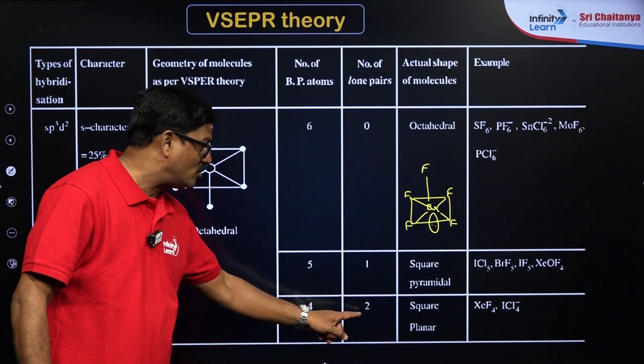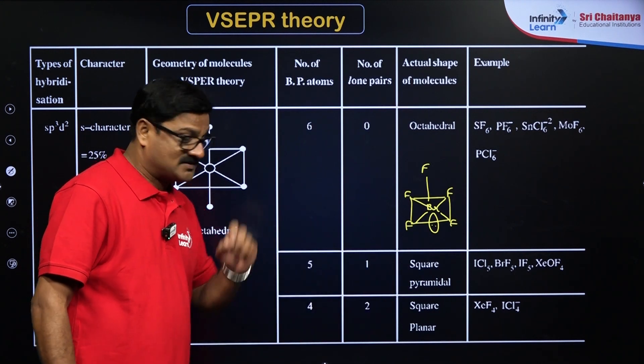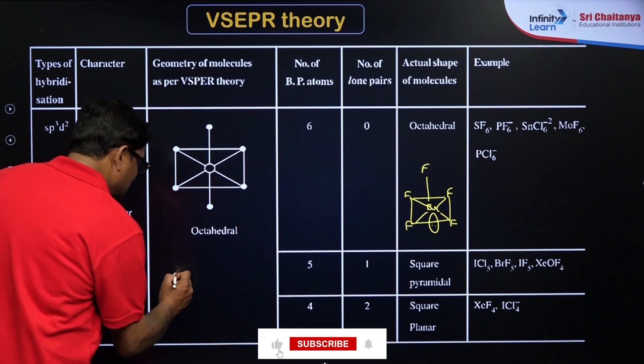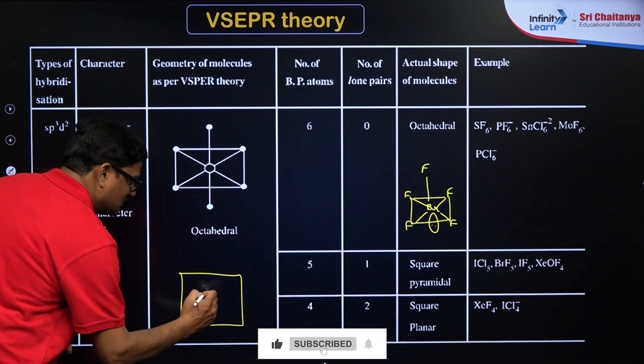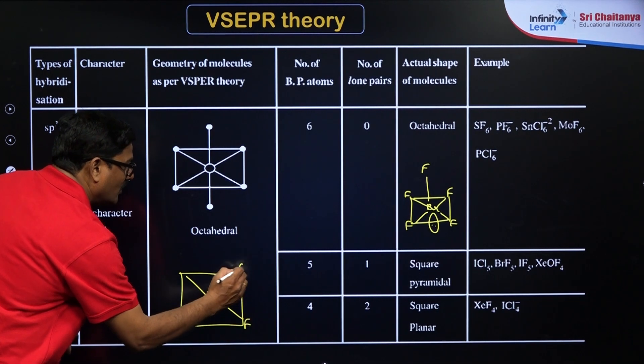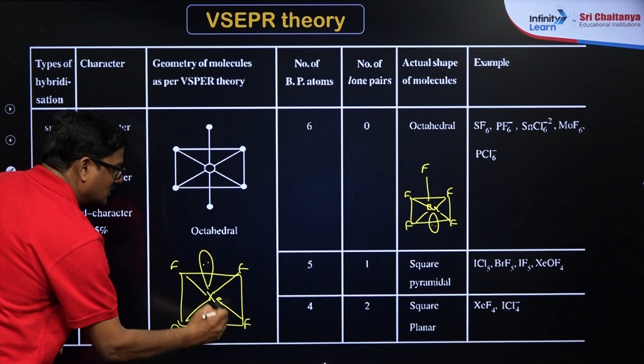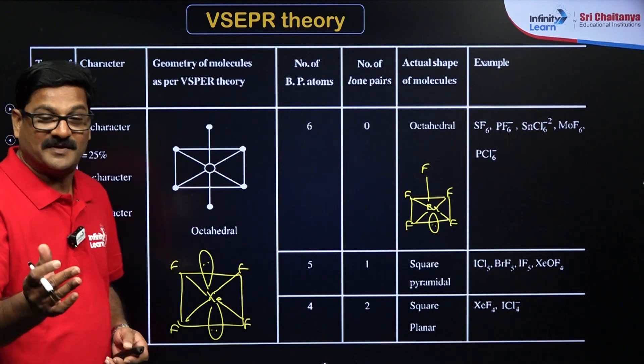Similarly, 4 and 2, four bond pairs and two lone pairs, it is going to be square planar, that is XeF4. XeF4 shape comes like this: xenon, four bonds - fluorine, fluorine, fluorine, and fluorine. There are two lone pairs of electrons.